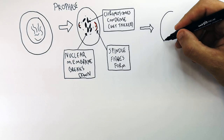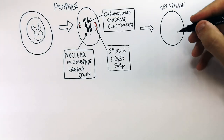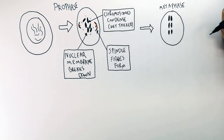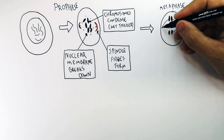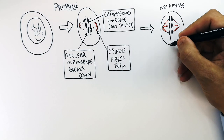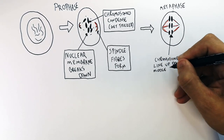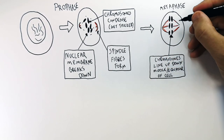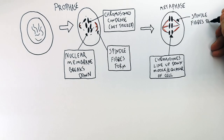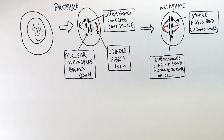The second stage of mitosis is metaphase. During metaphase, two things happen. Number one, the chromosomes line up down the middle — or the equator — of the cell. Secondly, the spindle fibers, which were formed in prophase, bind the chromosomes. Those are the two things that happen in metaphase.